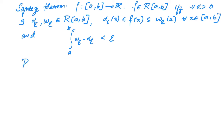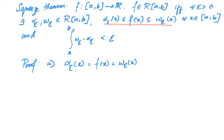One side of the proof is quite easy: if f is integrable, then set alpha_epsilon(x) = f(x) = omega_epsilon(x). Clearly f(x) ≤ f(x) ≤ f(x), so the sandwiching condition is satisfied. And since omega_epsilon(x) = alpha_epsilon(x) for all x, the integral from a to b of (omega_epsilon − alpha_epsilon) is the integral of zero, which is zero. Hence this condition is also satisfied, so this direction is trivial.